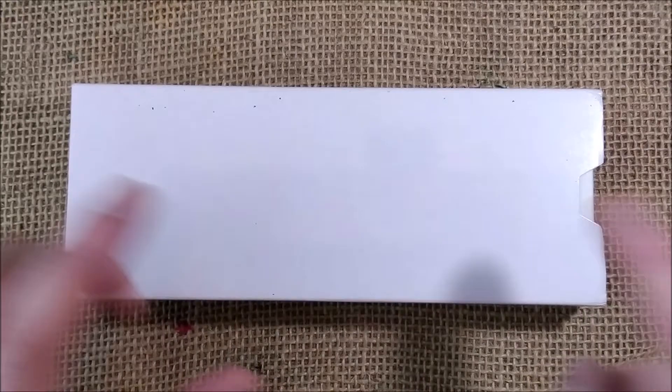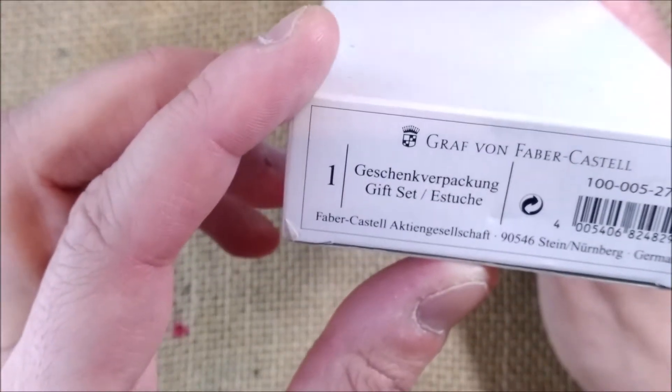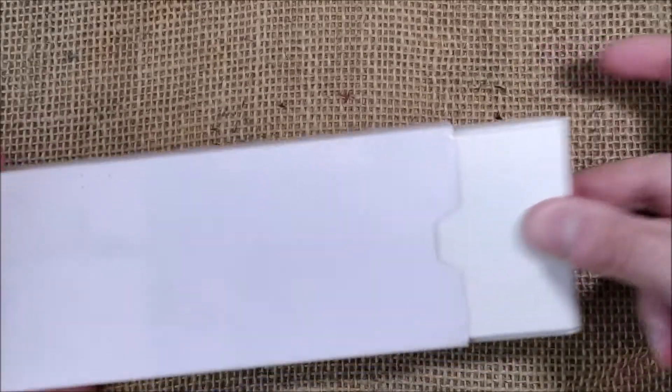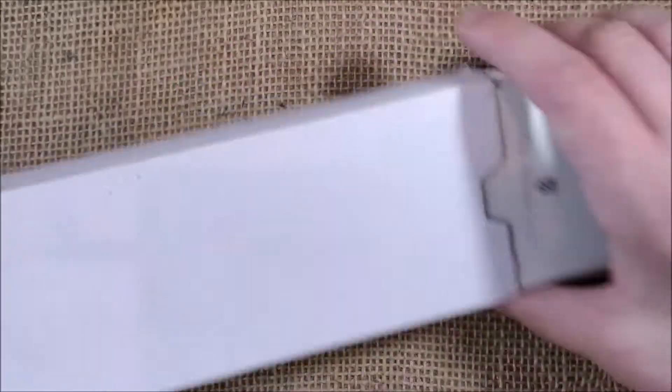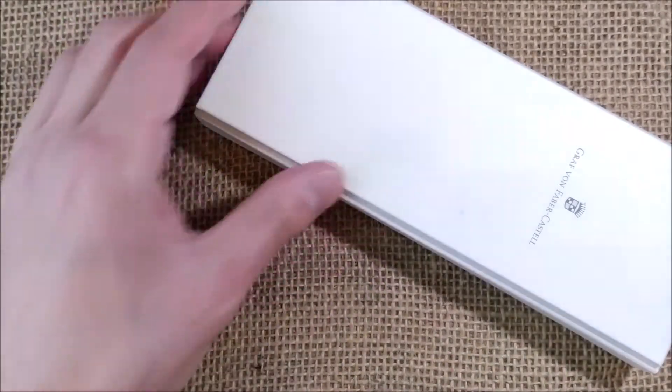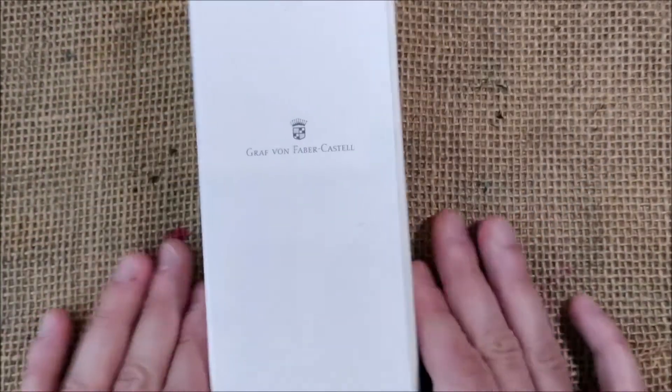Now let's see what I have here, and what I have is a Graf von Faber-Castell. The pen comes inside this kind of box which has this white sleeve made of paper cardboard.